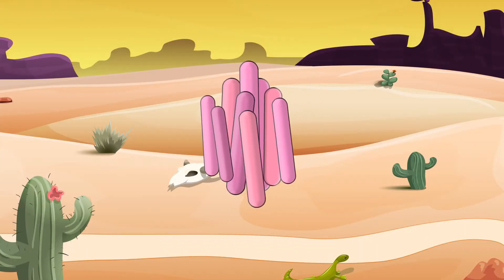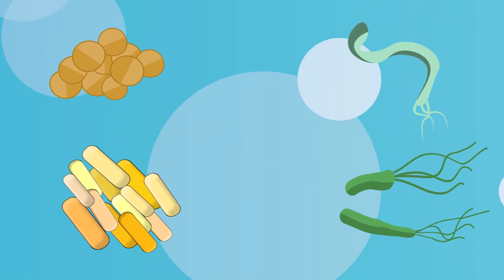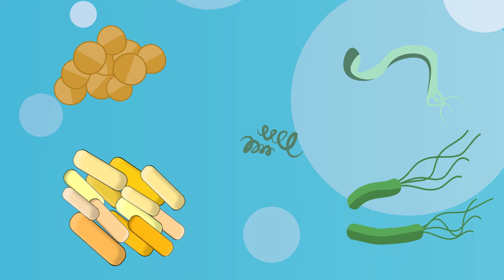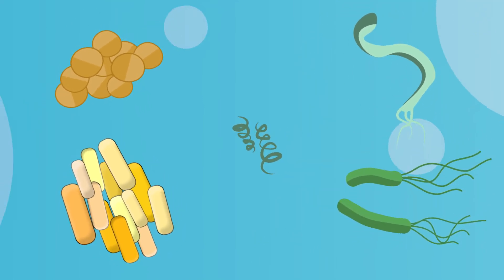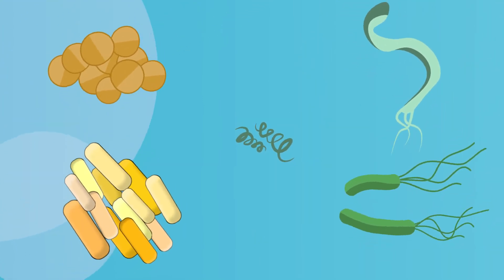Bacteria are classified into five groups according to their basic shapes: spherical, rod, spiral, comma, or corkscrew. They can exist as single cells in pairs, chains, or in clusters.